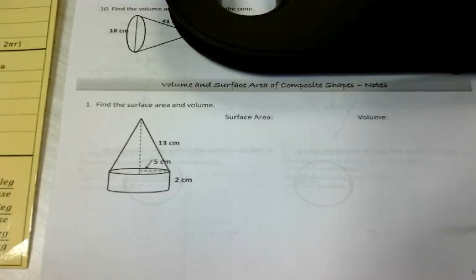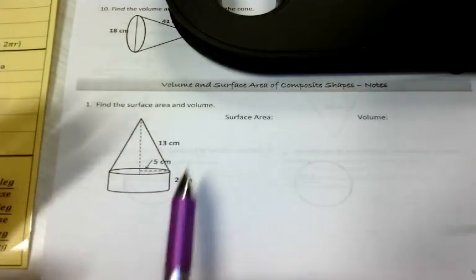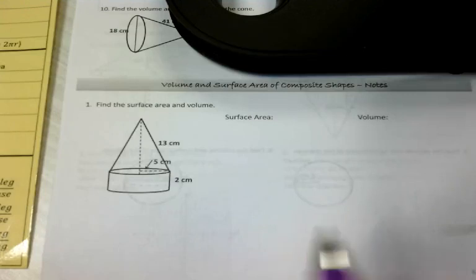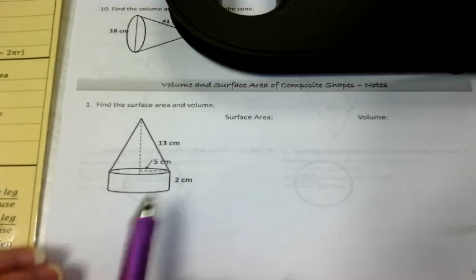Today we're going to talk about the volume and surface area of composite shapes. Composite shapes are just when you take two or more shapes and combine them, and then we're going to find their surface area altogether or their volume altogether.